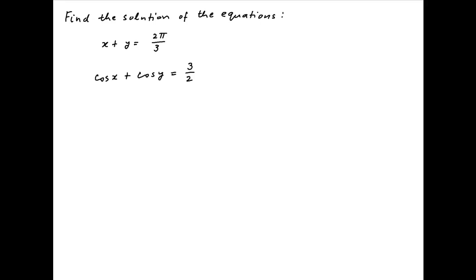The first equation implies that y is equal to 2π/3 minus x. Substituting this in the second equation, we get cos(x) plus cos(2π/3 minus x) is equal to 3/2.